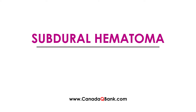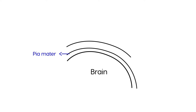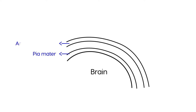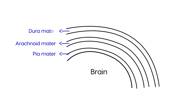Subdural hematoma is the topic, and the best way to start is by drawing a diagram to describe all the layers. You have the brain, and right on top of the brain sits a layer called the pia mater. Above that there's a little bit of space, and then you have a second layer known as the arachnoid mater. Above that there's another space, and then you have a third layer, the topmost layer, known as the dura mater. Directly above the dura mater is the skull.